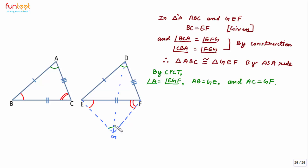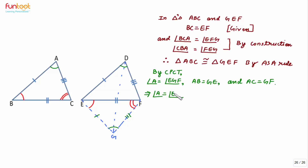So these two angles marked in green are equal. Also, AB is equal to GE, and AC is equal to GF. We can mark these equal sides on the figure.